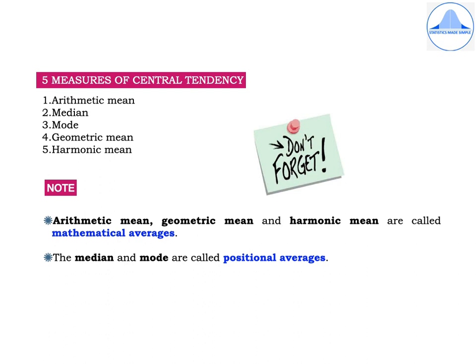There are five measures of central tendency. First one is the arithmetic mean, second median, third mode, fourth geometric mean, fifth harmonic mean.